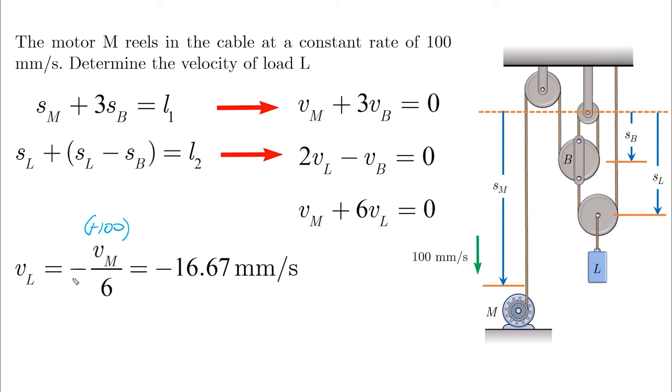So this is minus 100 over 6, which is minus 16.67 mm per second, which means 16.67 mm per second in the other direction.